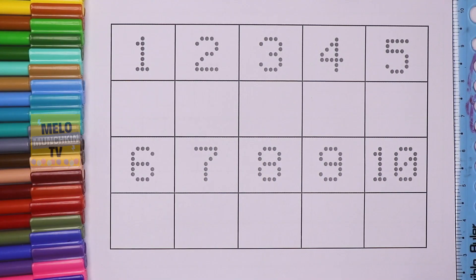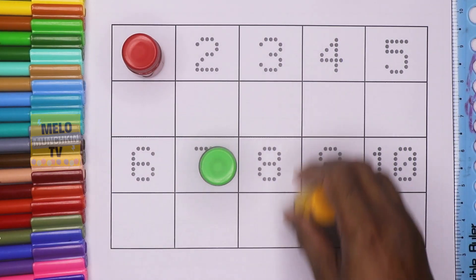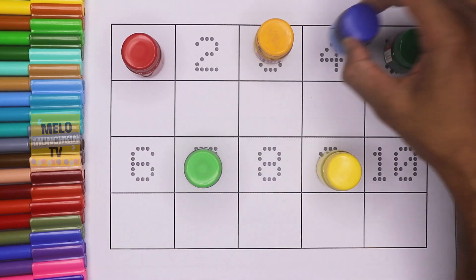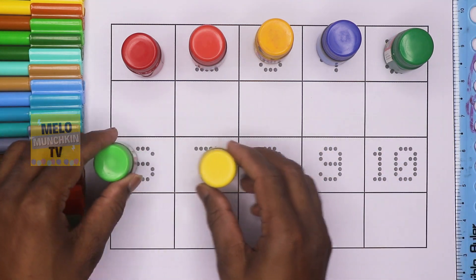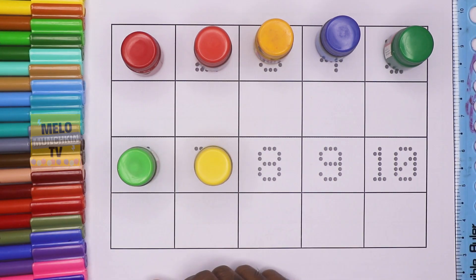Hello kids, today we will learn numbers, but before that, colors. Let's put the colors: one, two, three, four, five, six, seven. So seven colors are there. One, two, three, four, five, six, seven, and three are missing.